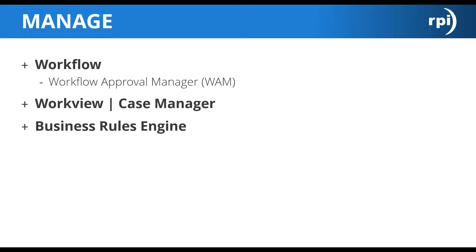The OnBase business rule engine for workflow allows organizations to quickly react to ever-changing business conditions. Decision makers can immediately alter production workflow to comply with changes in organization policy that govern business processes. This ability to make on-the-fly changes to production workflow logic without having to rely on IT resources will result in process agility while still meeting business control and transparency requirements.